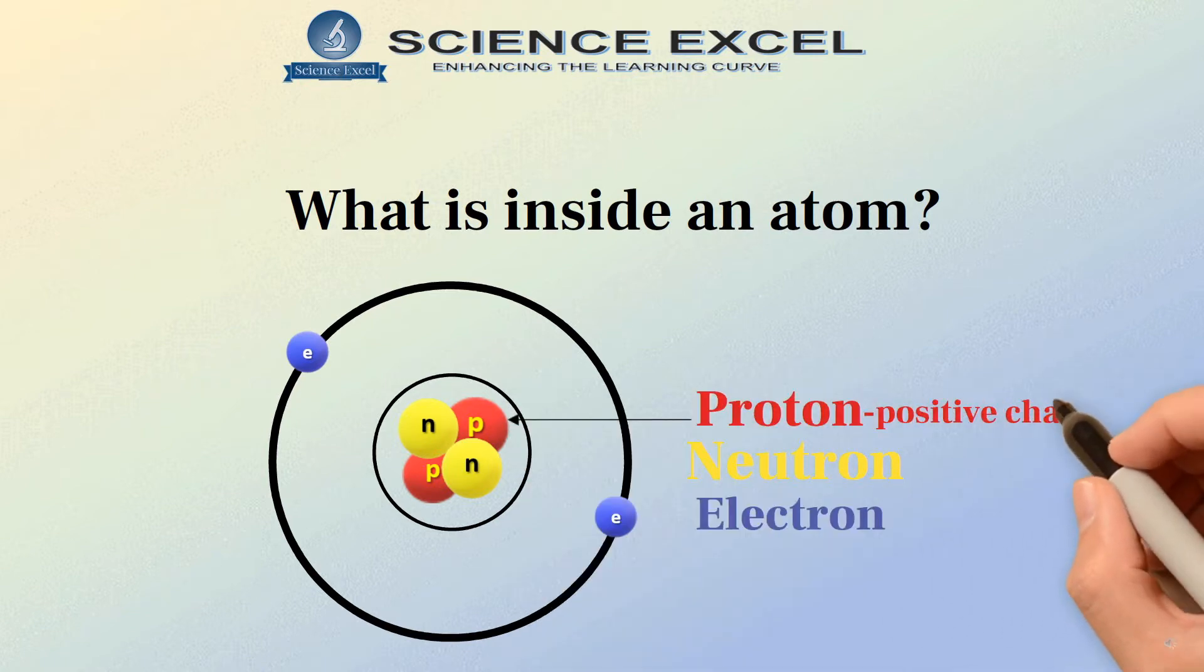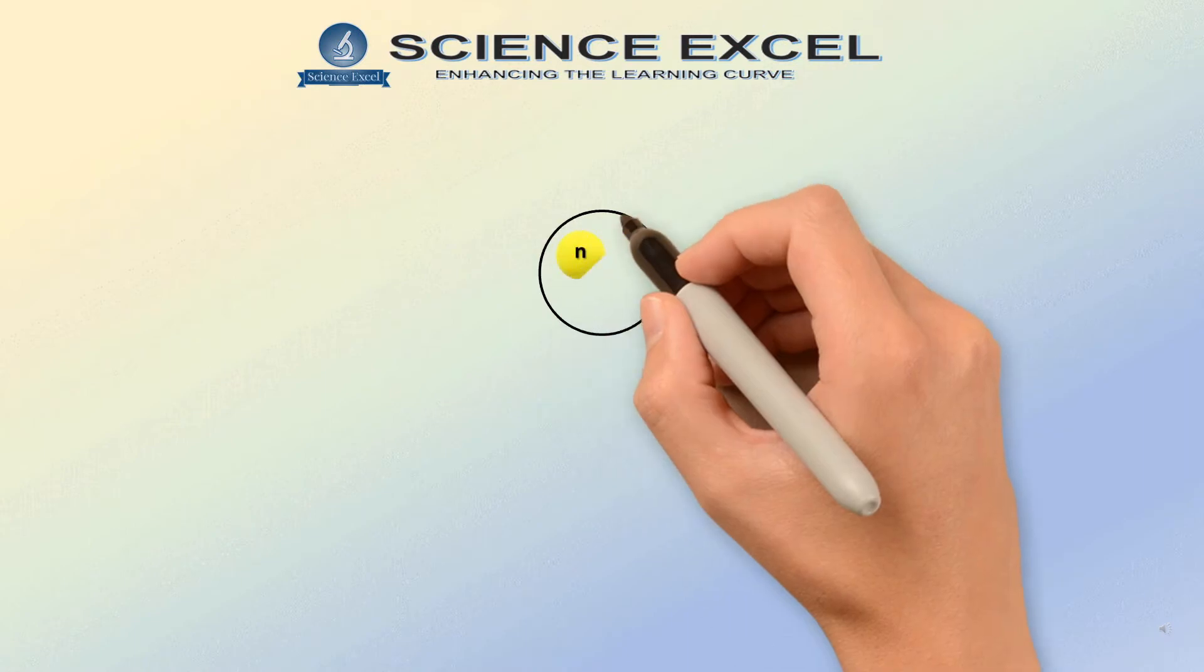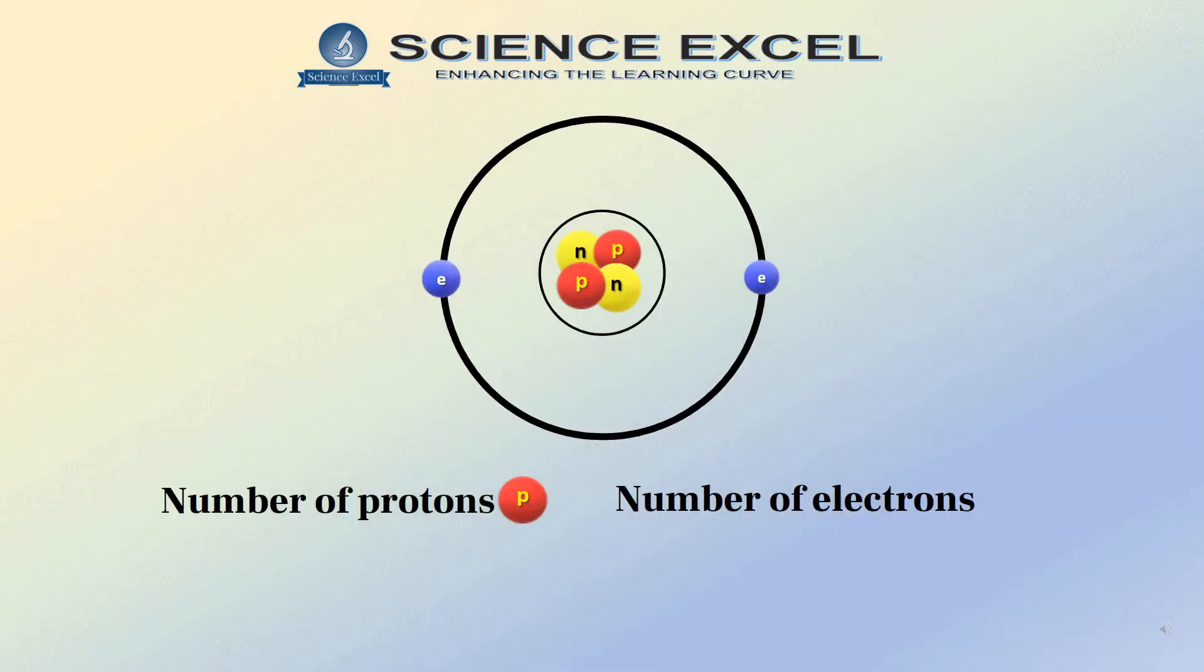Protons have a positive electrical charge. Neutrons are uncharged and electrons have a negative charge. In an atom, the number of protons and the number of electrons are equal. The positive charges on the protons balances the negative charges on the electrons. Hence, an atom is electrically neutral.